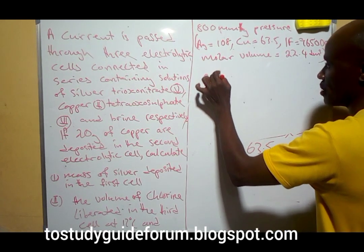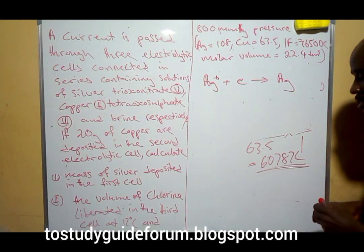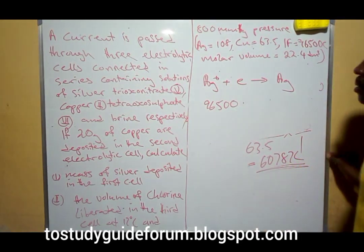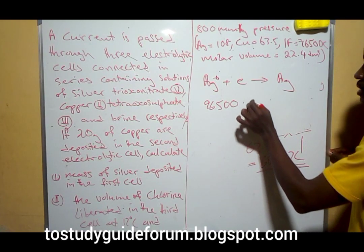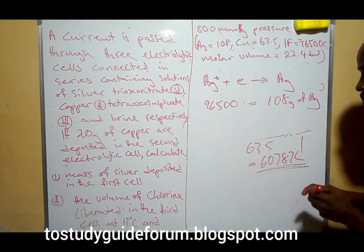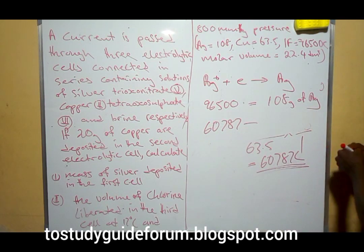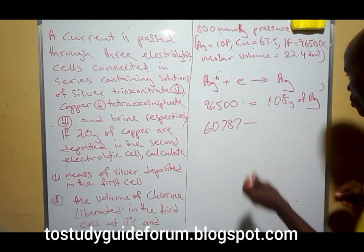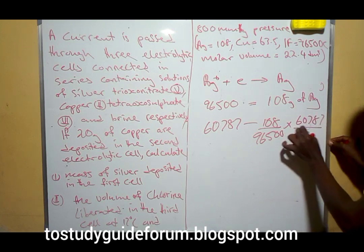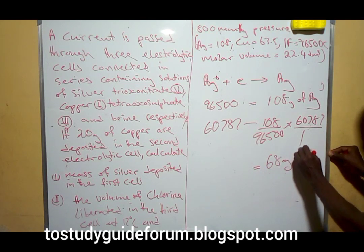We know that silver is univalent. What it means is that 96,500 coulombs of electricity will give us 108 grams of silver. So 60,787 coulombs will then give us a certain mass of silver. When we calculate that, we get the mass of silver deposited in grams.